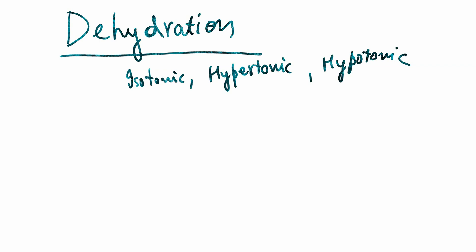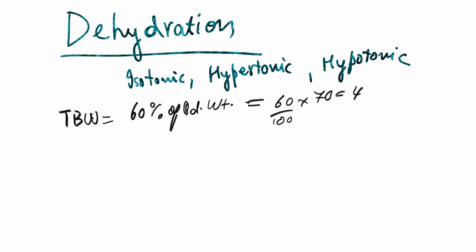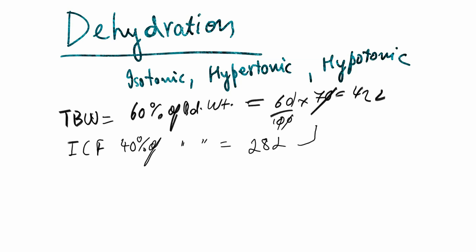First I will be talking about some normal and basic details about the quantities of fluid in our body. The total body water in our body is about 60% of body weight, and for a 70 kg man we have approximately 42 liters of water. The intracellular fluid is about 40% of body weight, which is approximately 28 liters in a 70 kg male or female.